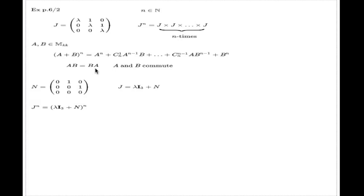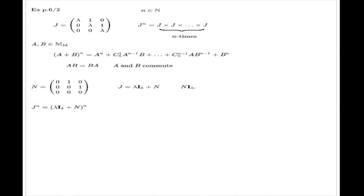Now the question is: do we have this extra commutativity condition for this particular couple of matrices? Of course we do, because if you multiply N with the identity matrix, that's just the nature of the identity matrix — the result will be N, and the same is true the other way around. That's something we discovered last time. So for this particular couple of matrices, we do have the commutativity assumption, and that's why we can use the binomial expansion.